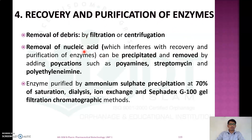After the production process, debris is removed by filtration or centrifugation, then nucleic acids are removed by precipitation using polycations like polyamines, streptomycin, and polyethylamine. The enzyme is then purified by ammonium sulfate precipitation at 70% saturation, or by dialysis, ion exchange chromatography, or Sephadex G-100 gel filtration chromatography.